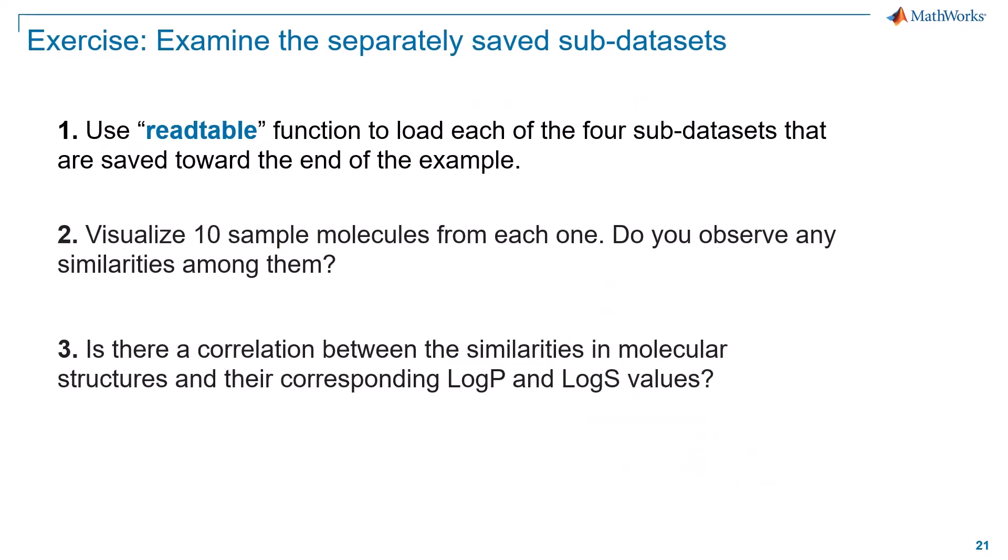This example saves molecules in each partition in a separate CSV file. As an exercise, I want you to use read table function to load each of the four sub datasets, visualize 10 sample molecules from each one, and inspect similarities among them. Do you think there is any correlation between the similarities in molecular structures and their corresponding log p and log s values?